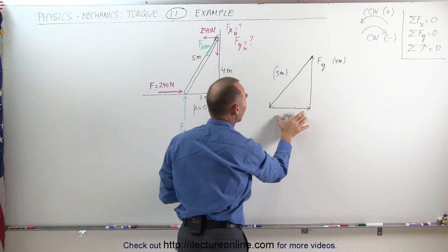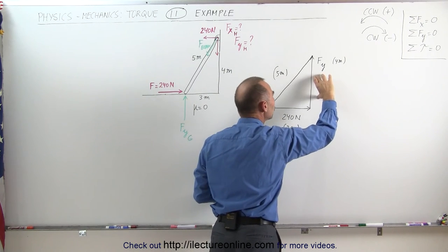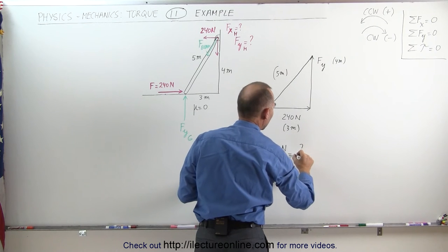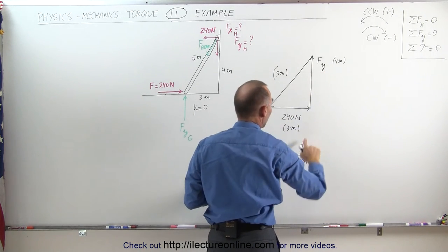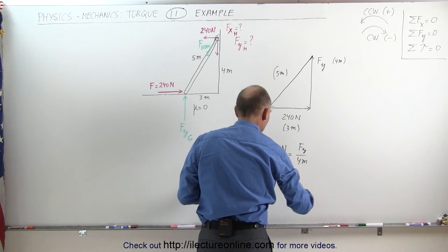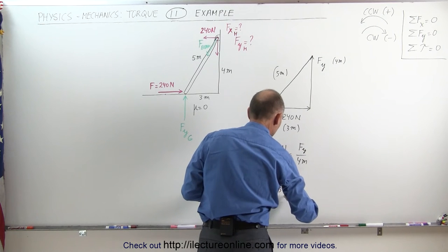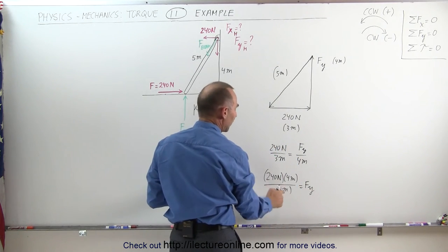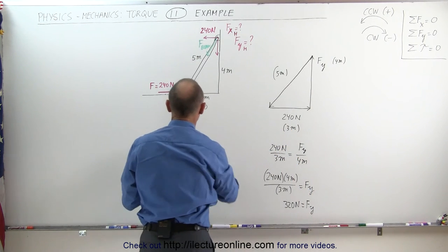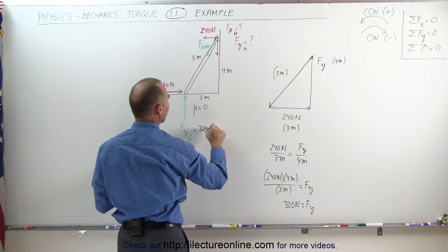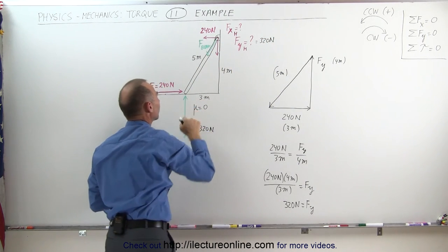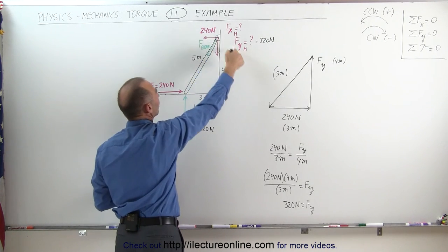If 240 newtons corresponds to 3 meters, then the force in the y direction corresponds to 4 meters. The ratio gives us: 240 newtons over 3 meters equals F sub y over 4 meters. Solving: F sub y equals 240 times 4 divided by 3, which is 80 times 4, giving 320 newtons. So the force in the y direction is 320 newtons at the ground, and therefore also 320 newtons at the hinge, since those are the only counterbalancing forces.